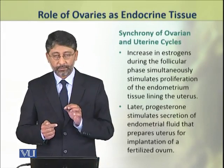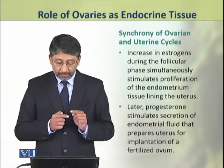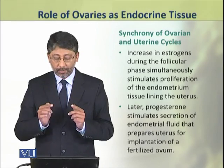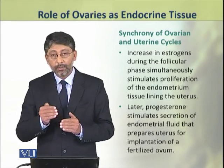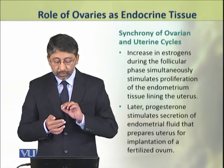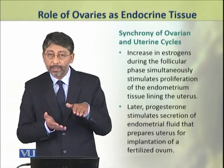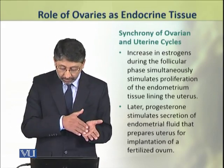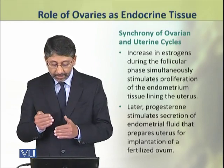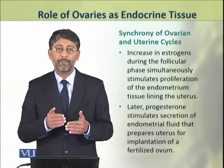The ovarian and uterine cycles are synchronized when the increasing estrogen concentration during the follicular phase simultaneously stimulates proliferation of the endometrium — the tissue lining of the uterus. During the follicular phase, estrogen causes the endometrium and uterus wall to thicken. Progesterone plays an additional role by stimulating the secretion of endometrial fluid, as a result of which the uterus is prepared for the implantation of a fertilized ovum.